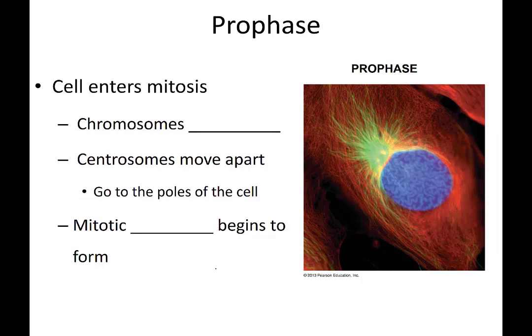Prophase is the beginning of mitosis. Keep in mind the cells have already gone through interphase — the G1 phase and the S phase where they've duplicated their chromosomes, and the G2 phase where they're preparing for division. Now division is actually starting. During prophase, the chromosomes within the nucleus of the cell begin to condense. Prior to this step, the chromosomes were in a very diffuse state known as chromatin, but as the cell is preparing to divide its nucleus, those chromosomes begin to condense.